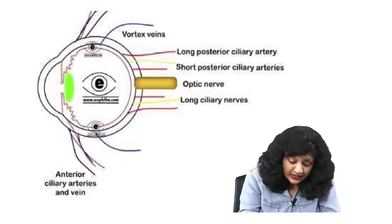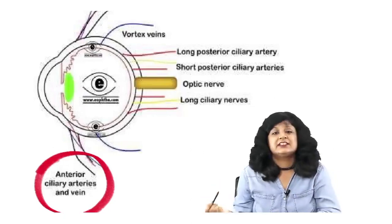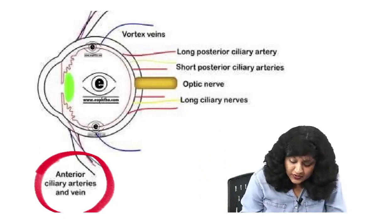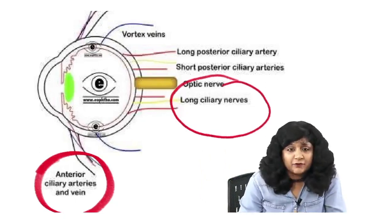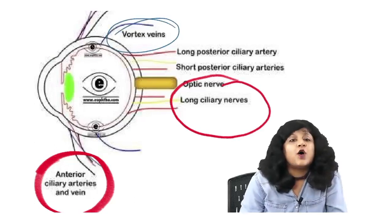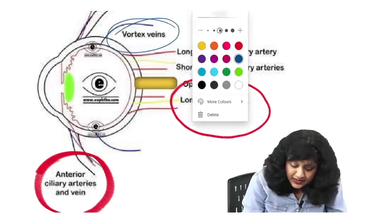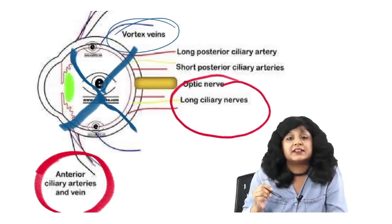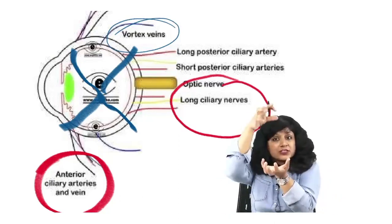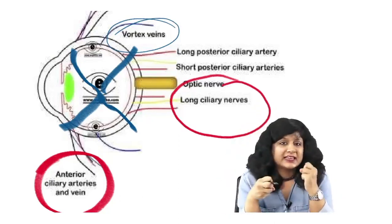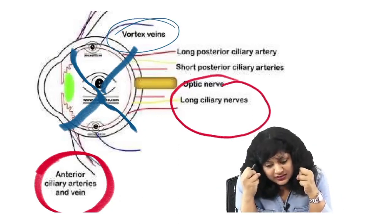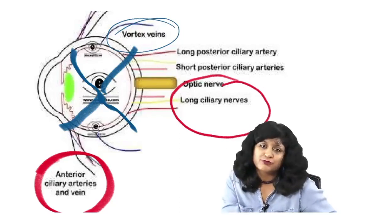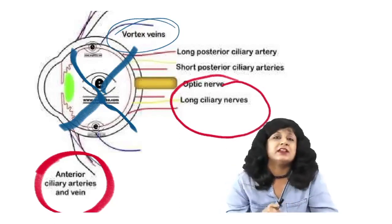Through the anterior we have the anterior vessels — arteries and veins. The nerves go posteriorly and we also have the optic nerve posteriorly. In the center we have the vortex veins — superonasal, inferonasal, superotemporal, and inferotemporal — causing compression of all of the cavity. Whenever there is compression of these veins, there will be a decrease in aqueous outflow, therefore leading to glaucoma.